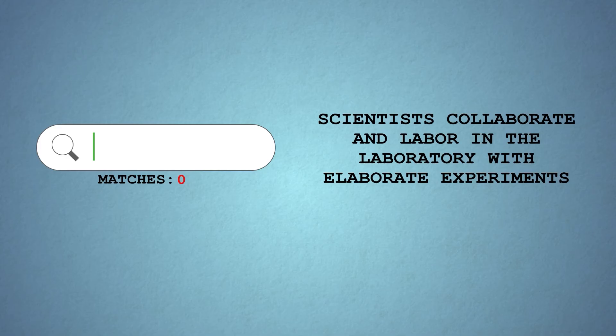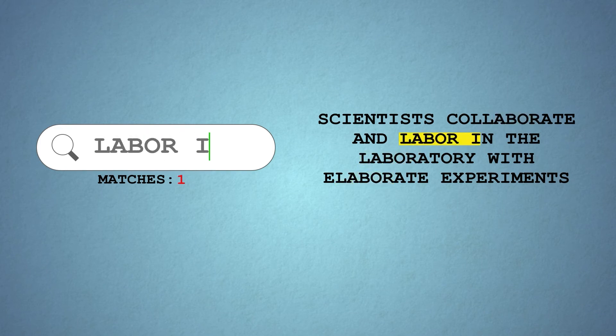In genome editing, we can go one stage further and control the likelihood of off-target effects. We can control the specificity of our find and replace to ensure that 'elaborate' isn't targeted as well.